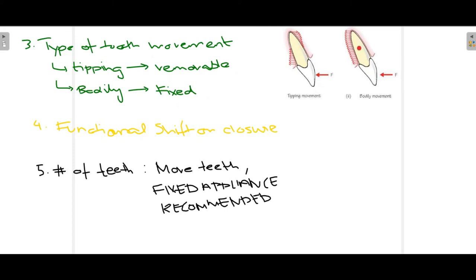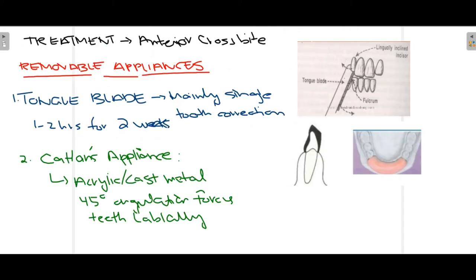The final factor to consider when treating anterior crossbite is the number of teeth that need to be corrected. If one or two teeth are being corrected, we can use a normal removable appliance. But if a segment of three, four, or five teeth requires correction, we prefer a fixed appliance.